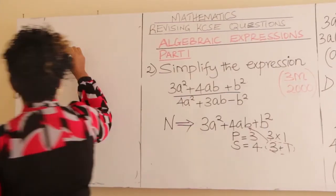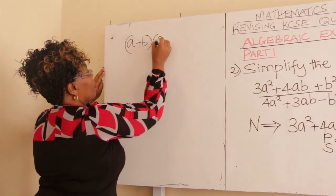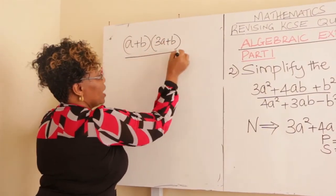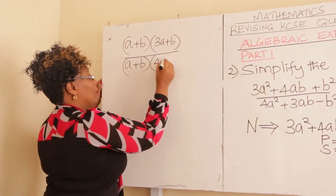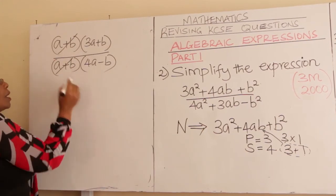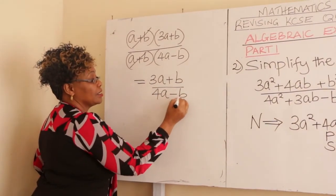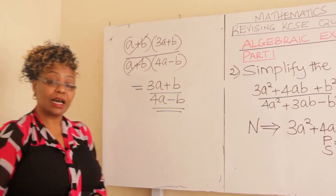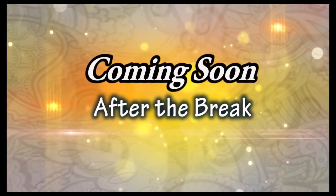Now divide the two. The numerator is (a + b)(3a + b) and the denominator is (a + b)(4a − b). The bracket (a + b) cancels out. Therefore, your answer is (3a + b) divided by (4a − b). That is our answer. We have come to the end of part one — let us meet after some break for part two.